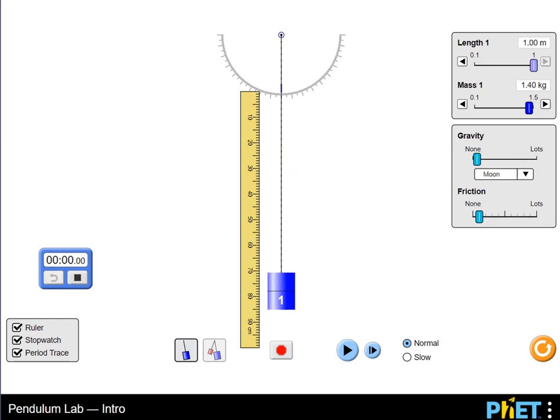You can lengthen the string of one or both pendulums, increase the mass, change the gravity based on different planets, or alter the friction and watch what happens.